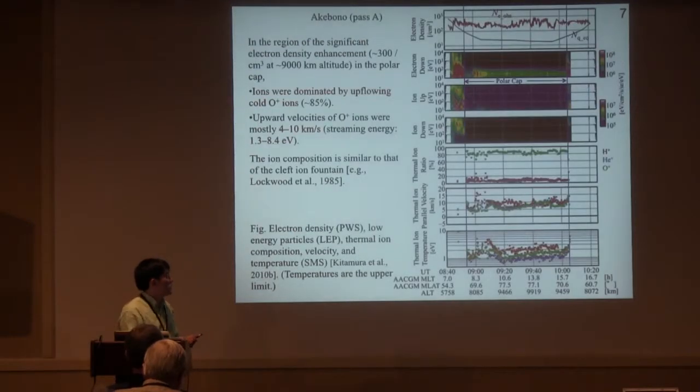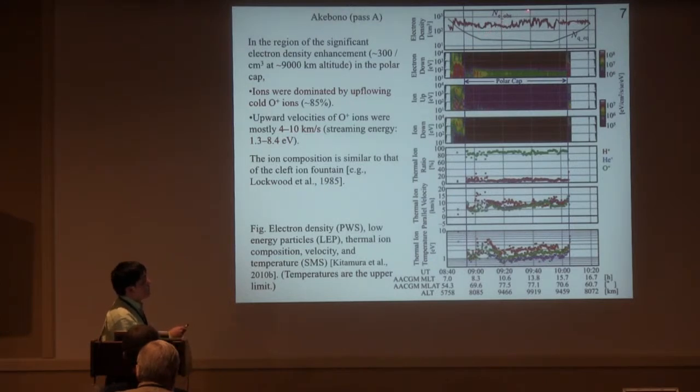Next, we show more detail. This red line shows observed density and this black line shows quiet time level. These panels show low-energy electrons and low-energy ions. In the polar cap region, low-energy ions are not present in energy range above about 10 electron volts. These three panels show the observations of thermal ions. This is composition, velocity, and temperature.